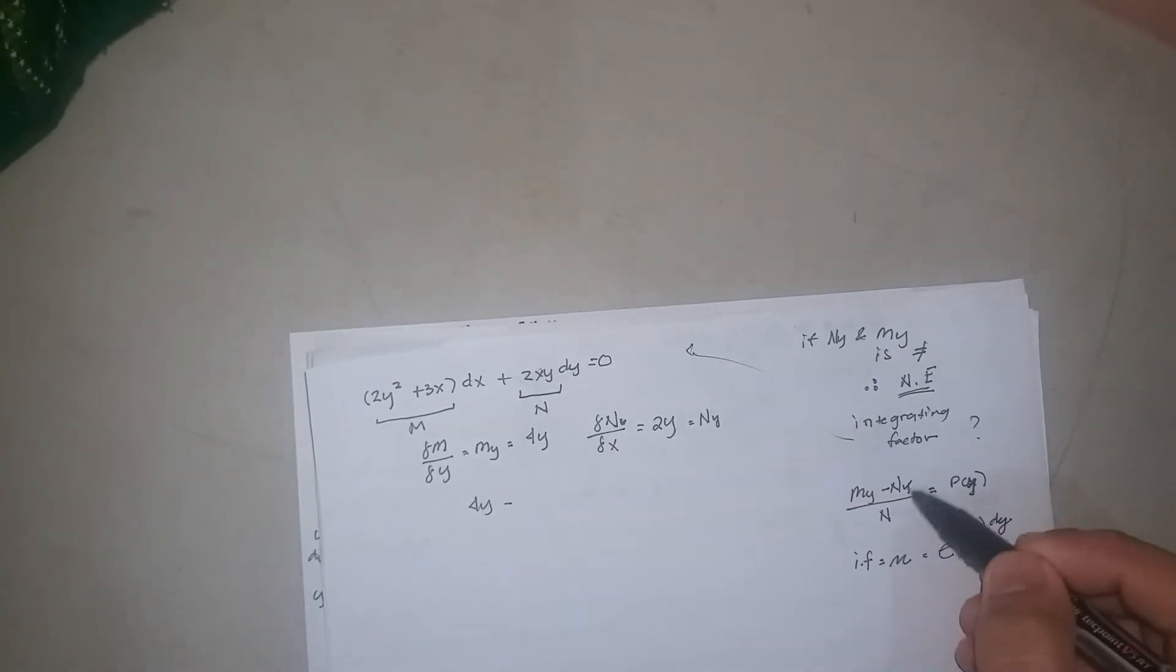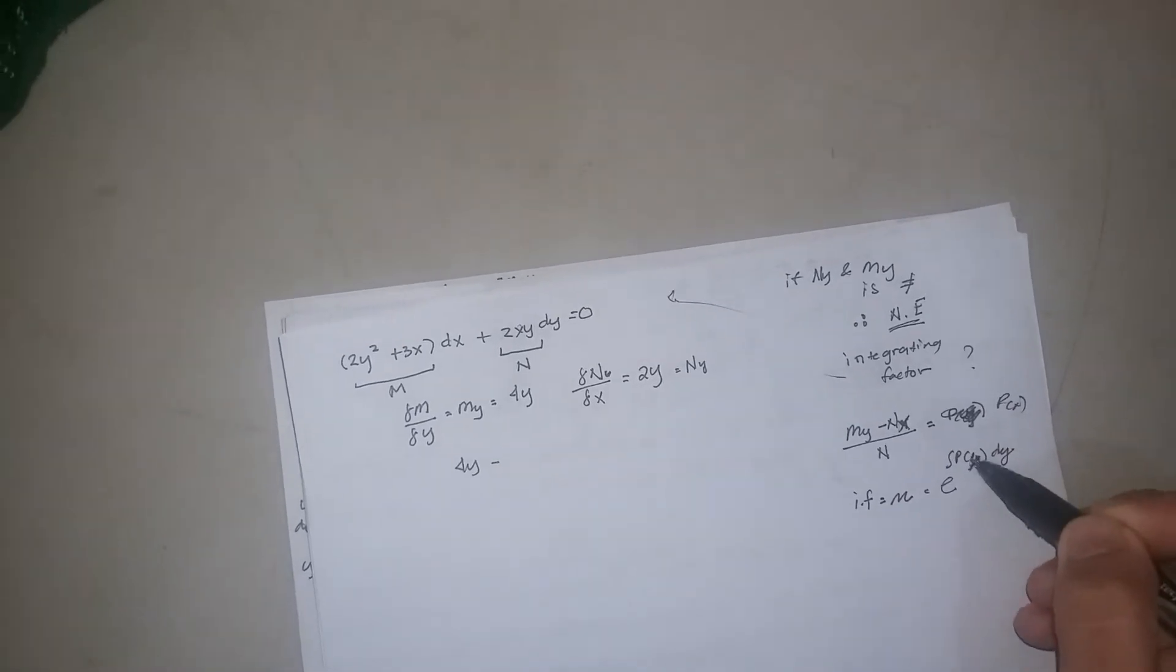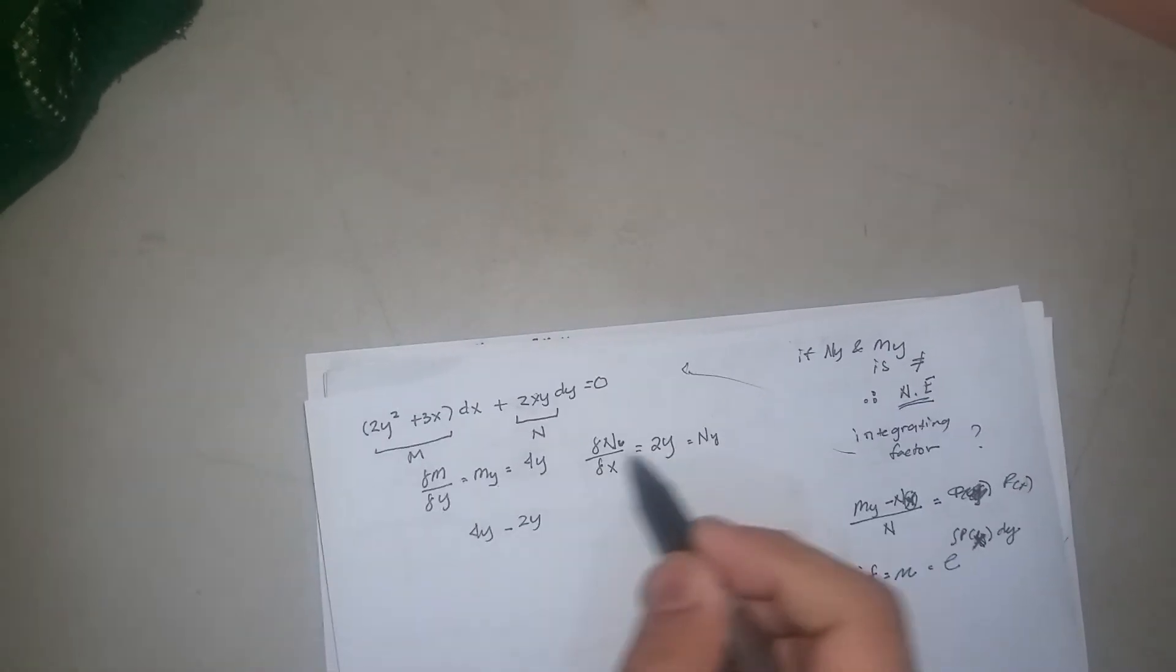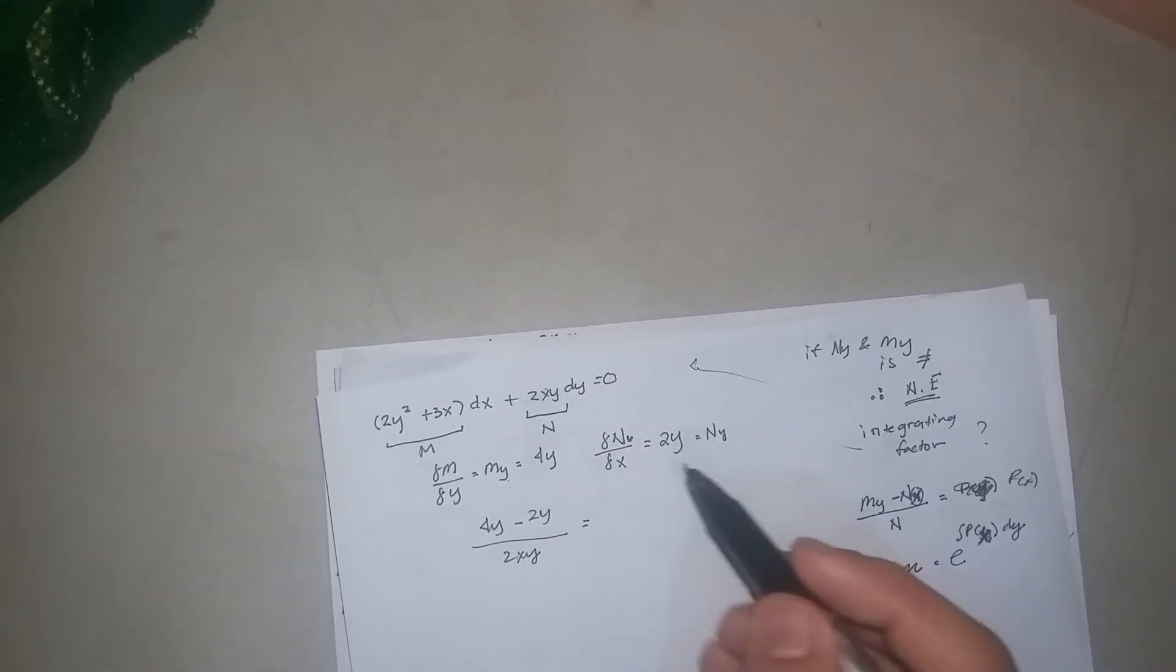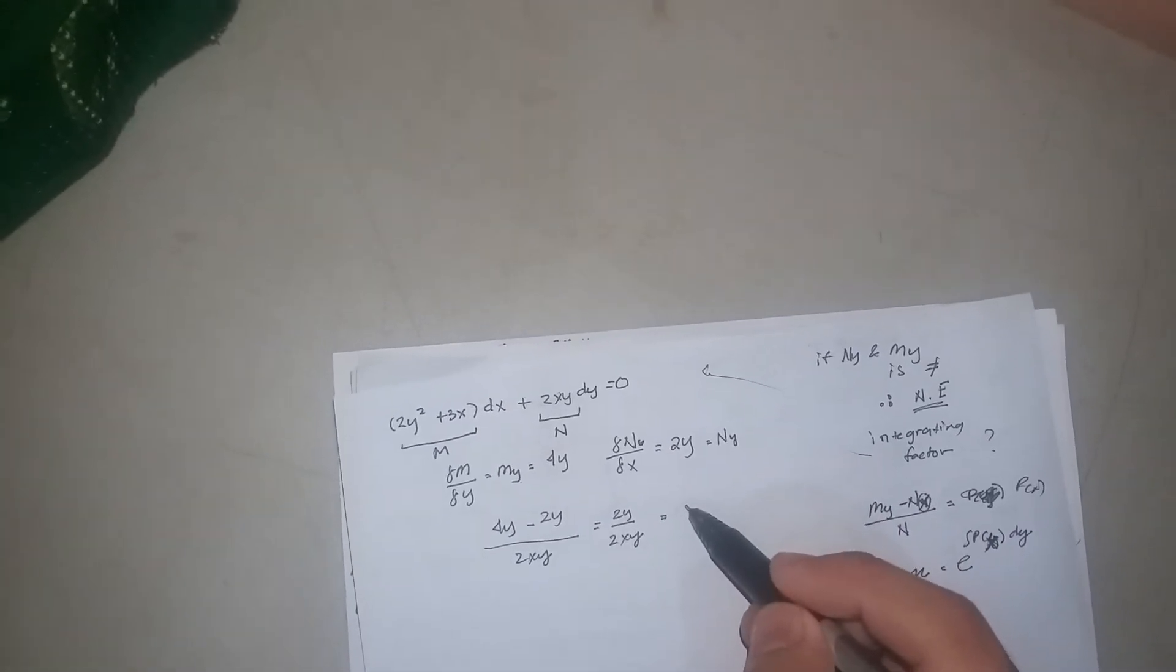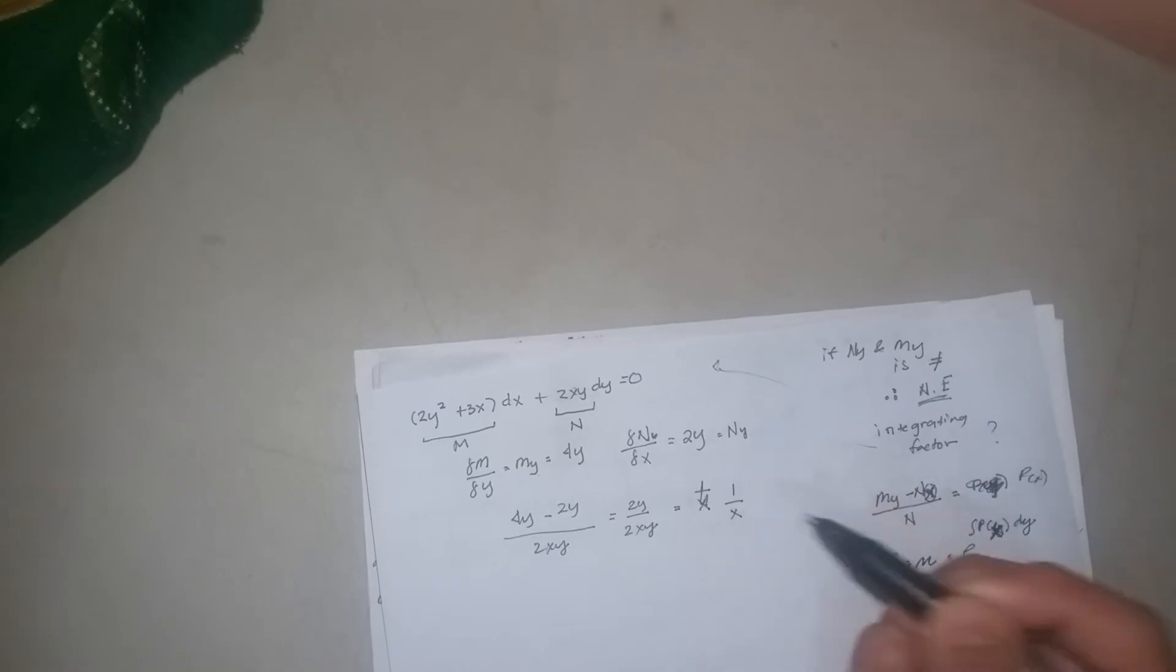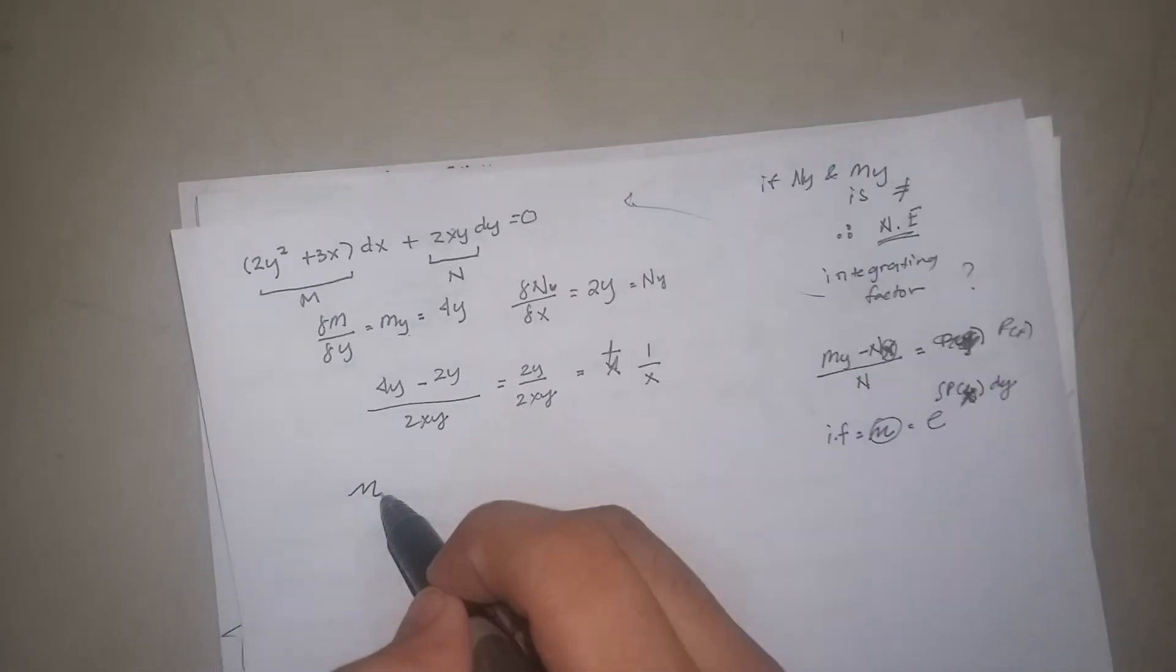Sorry, it's P of x, P of x. Therefore, My minus Nx over N: 4y minus 2y over 2xy. This will be equals to 2y over 2xy, or simply cancel, cancel, cancel, 1 over x.